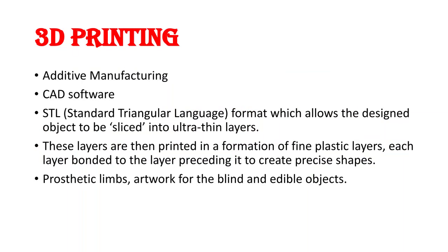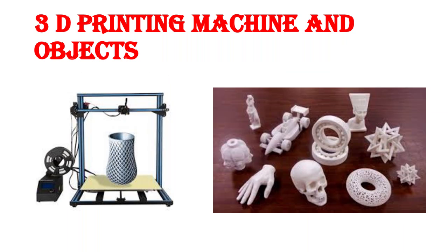Additive manufacturing or 3D printing has numerous applications like biomedical applications such as prosthetic limbs, artwork for blind people, and you can even print edible objects. Here in the first image you can see an example of a 3D printer — a simple form where material is used as filament, heated and deposited to get the object. In the second image you can see the 3D printed parts.